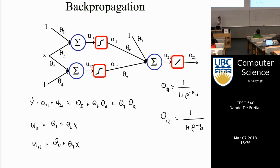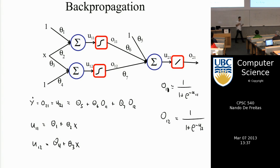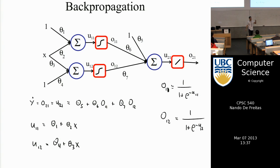Now let's cover how we train the neural network. The technique is called backpropagation. Training is broken into two steps: first, a forward pass — take input x, feed it through the network to compute all the u's, o's, and y-hat. Second, a backward pass — compute gradients backward through the network to adjust the parameters.